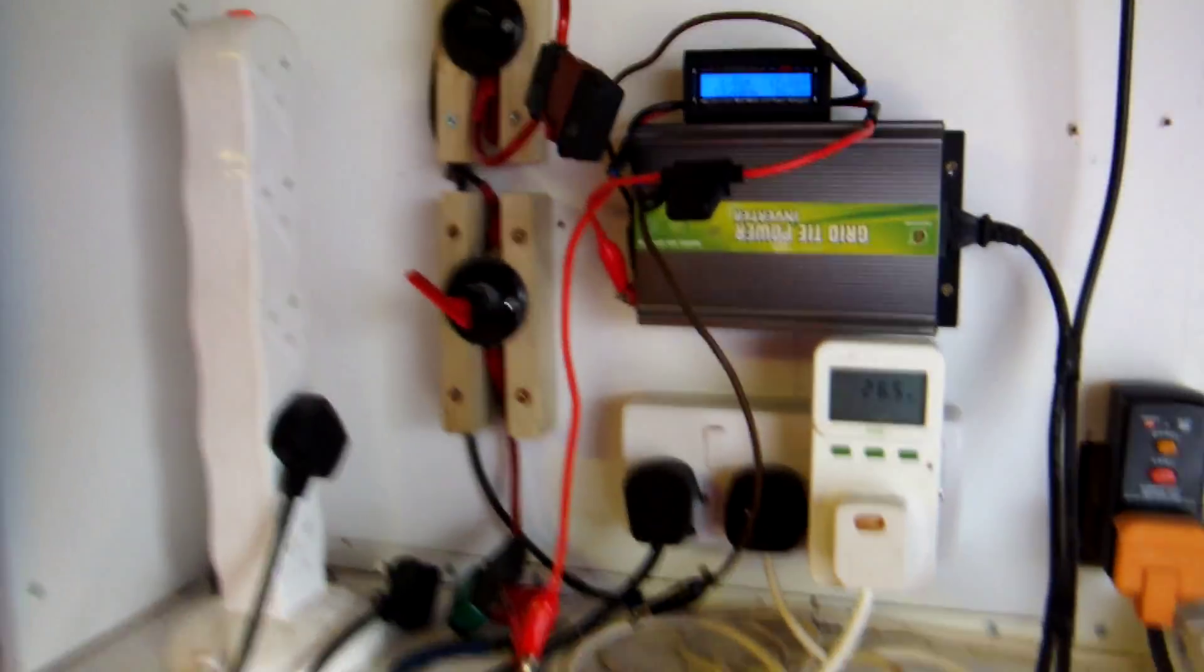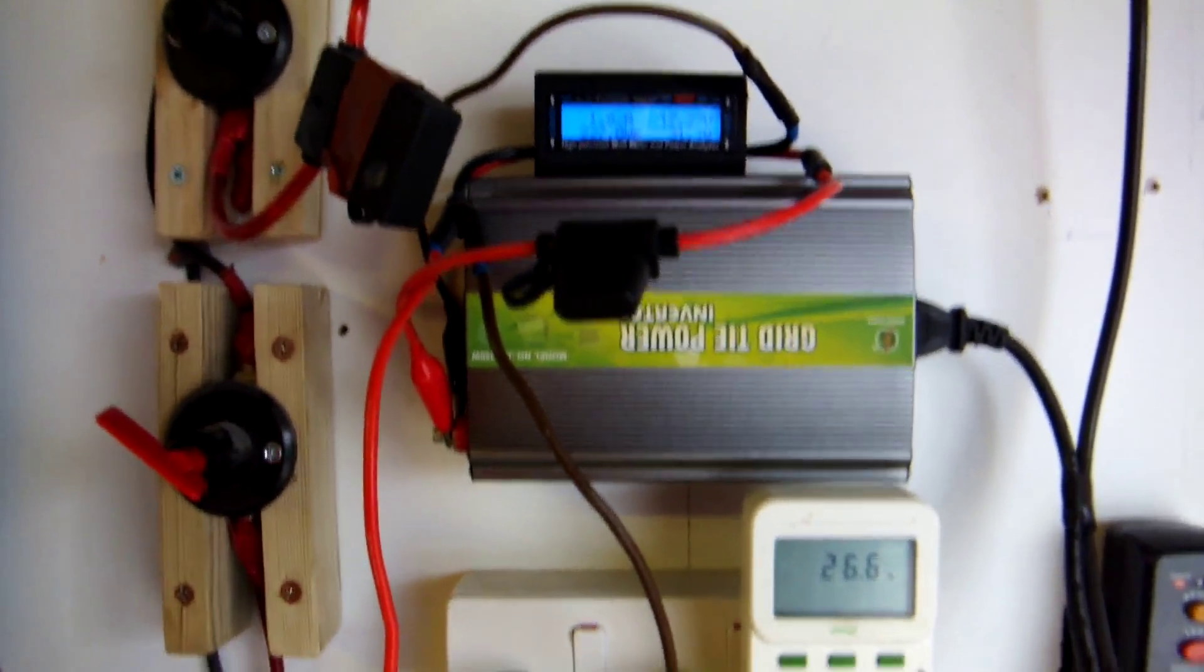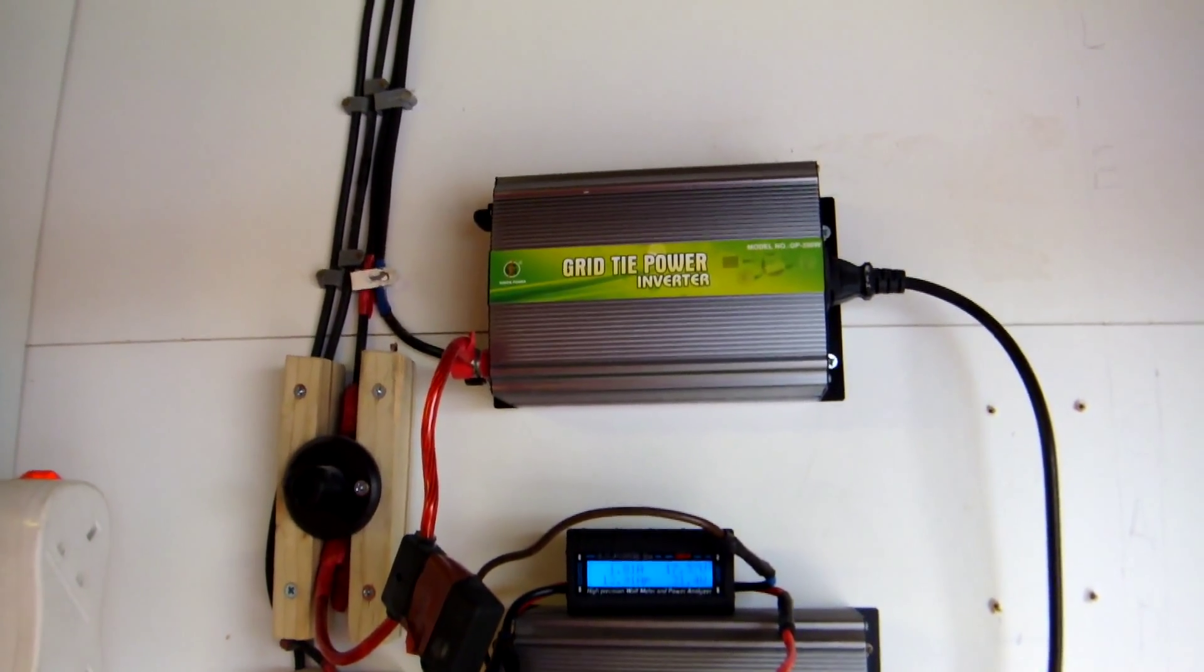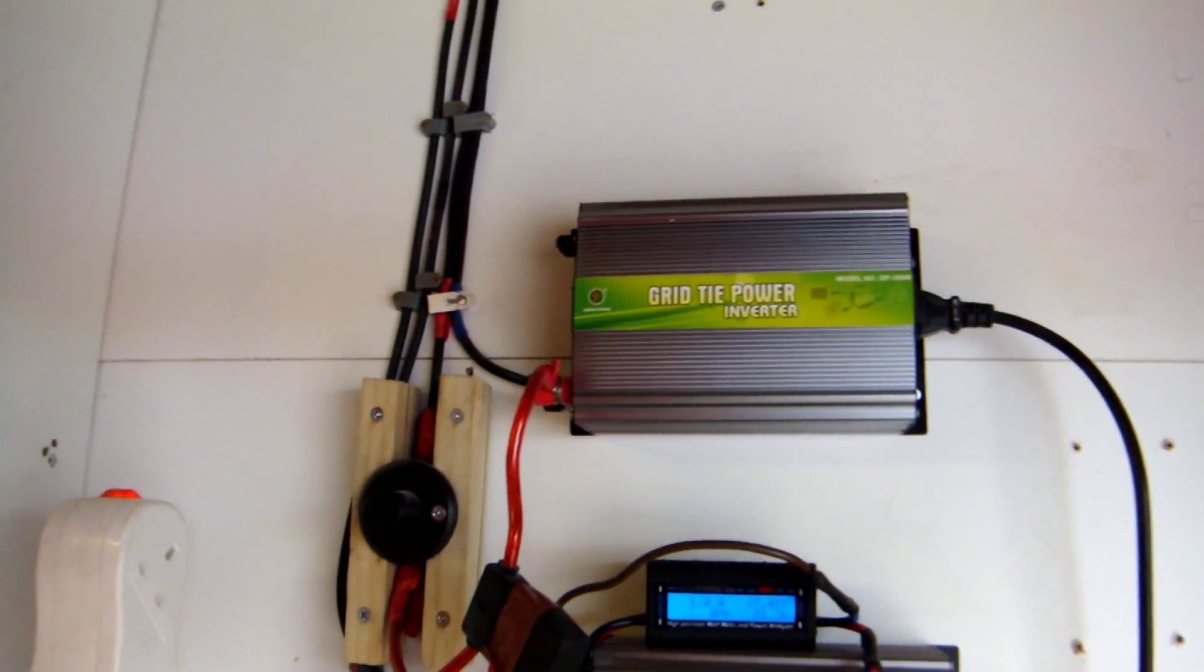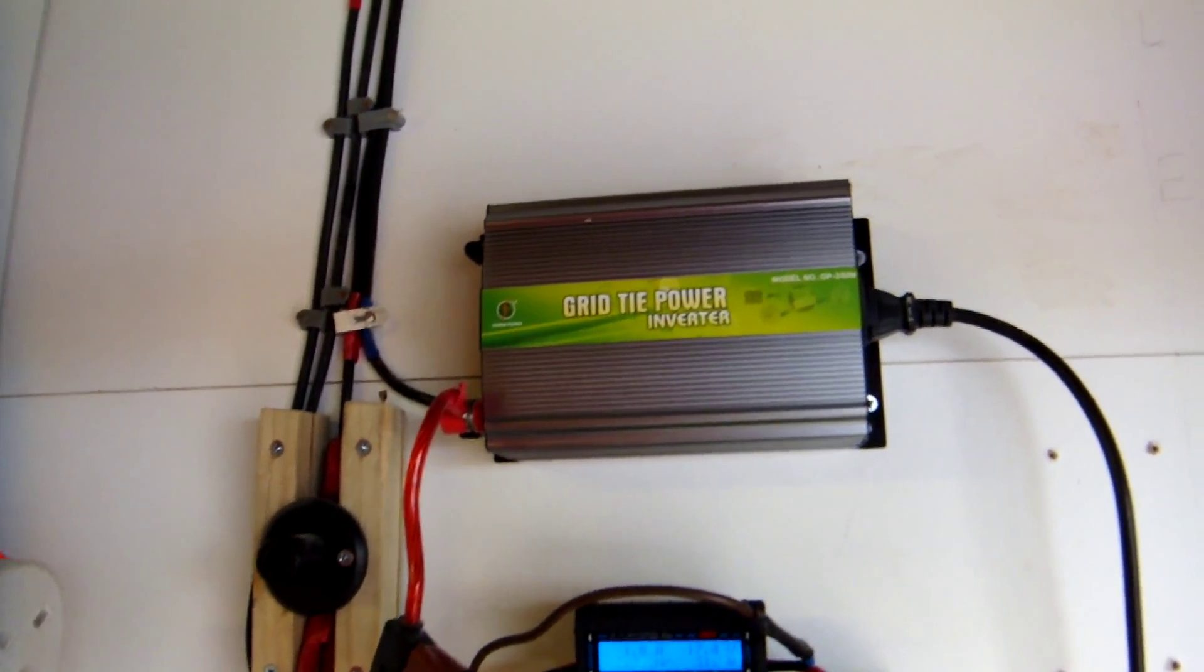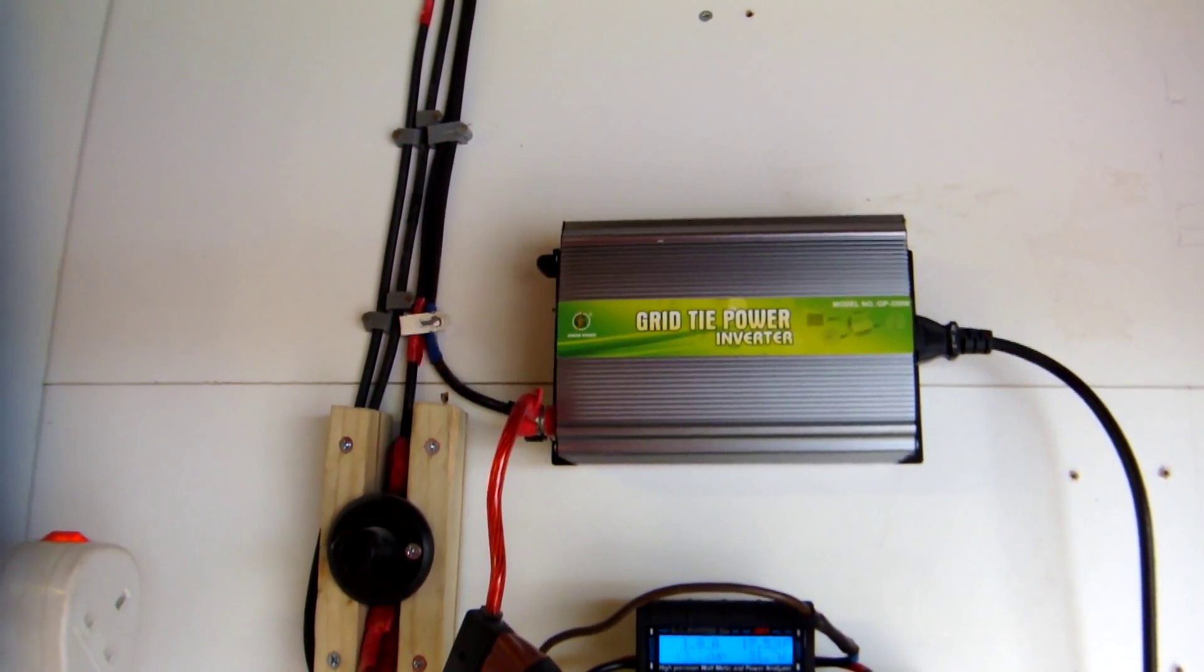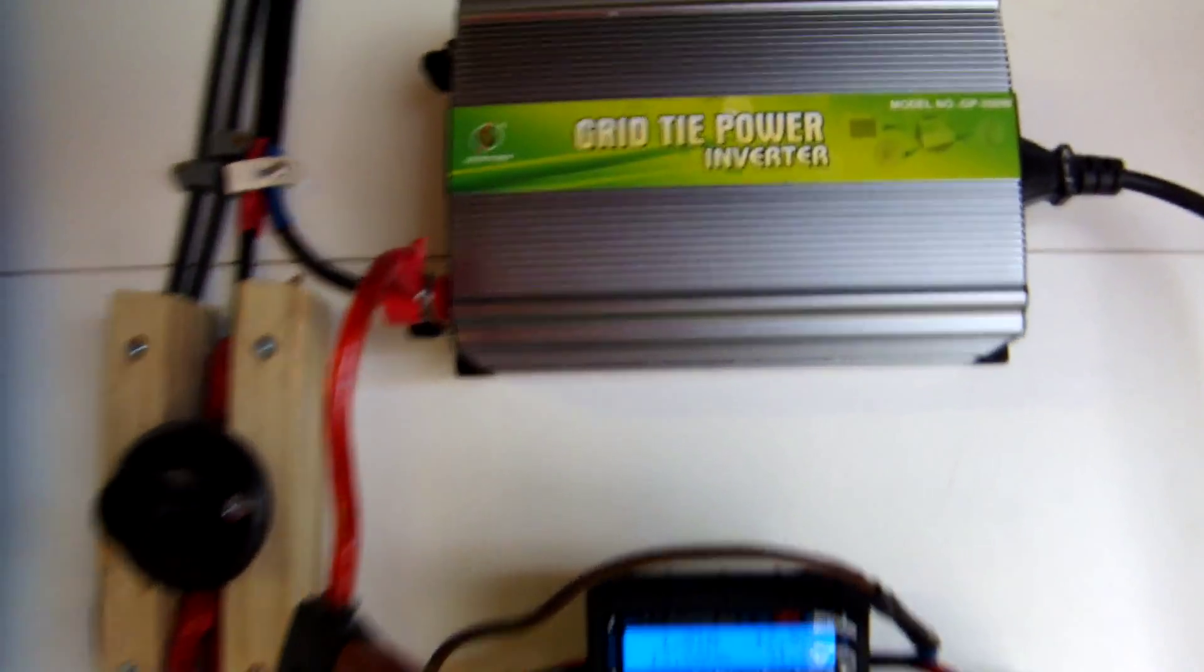But one thing I've done today was I wanted to see how efficient these cheap inverters are. As I've probably mentioned in my previous videos, these things are quite cheap. You can pick them up on eBay for about 40 to 50 pounds and they're rated for about 350 watts.